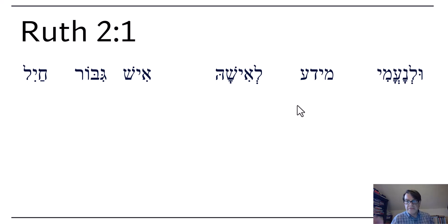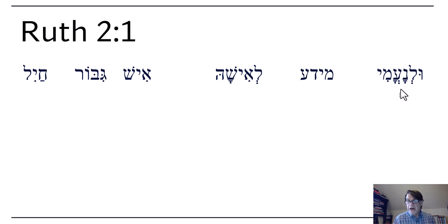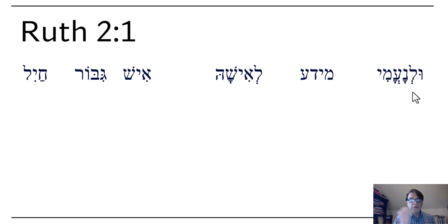So what is this verse here? The vav on the front is 'and.' Why is it a shuruk? I'm not 100% sure because lamed is not a bump letter. In front of bet, mem, and pay, we expect a shuruk. Why is there a shuruk here? I'm not sure. Except that sometimes Hebrew does this and I just deal with it. Na'ami is Naomi, right? So this is something having to do, and something L'Naomi. What is it, Naomi? It's the lamed — it's 'to Naomi.'